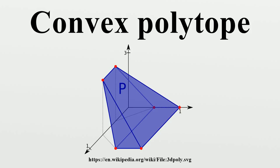For a compact convex polytope, the minimal V description is unique and it is given by the set of the vertices of the polytope.